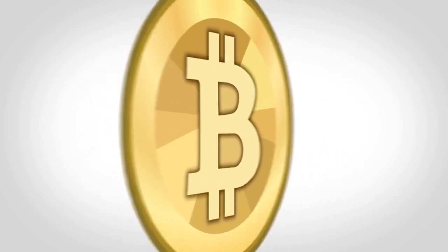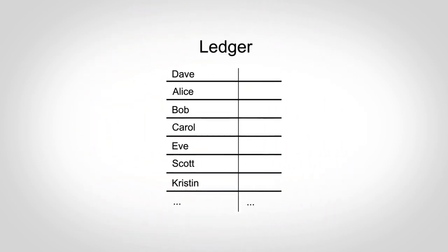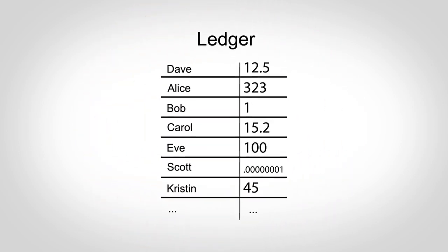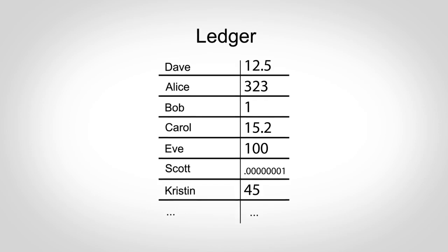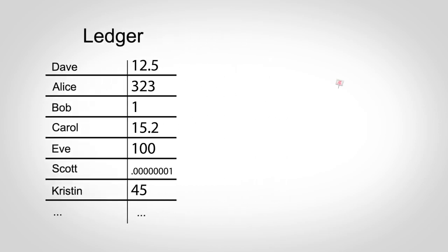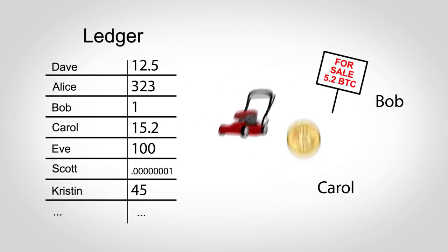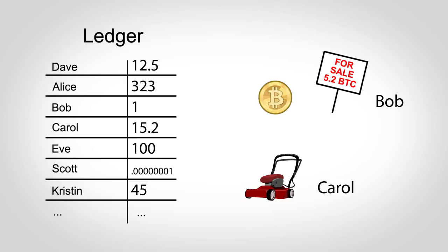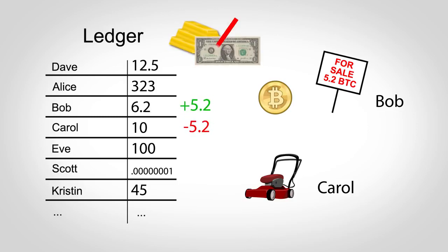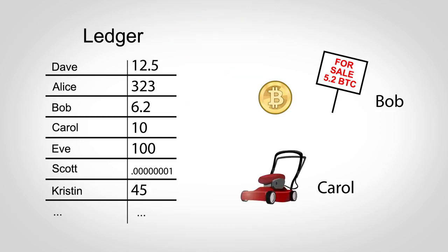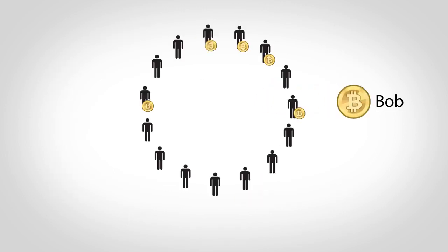At a very basic level, Bitcoin is just a digital file or ledger that contains names and balances, and people exchange money by changing this file. When Bob sells Carol a lawnmower for 5.2 Bitcoins, Bob's balance goes up by 5.2 and Carol's down by 5.2. There's no gold or government-issued money backing these numbers. Bob is only willing to trade his real-life lawnmower for a higher number in this digital file because he has faith that other people will also trust the system.